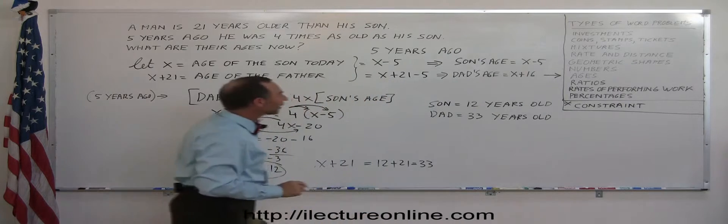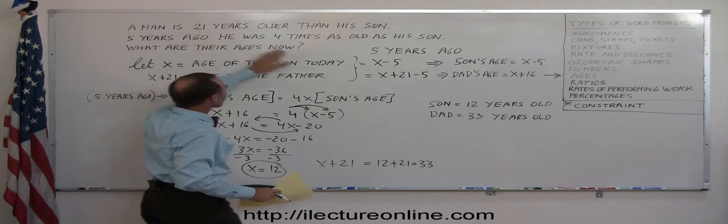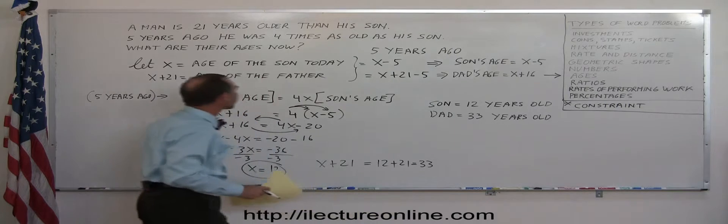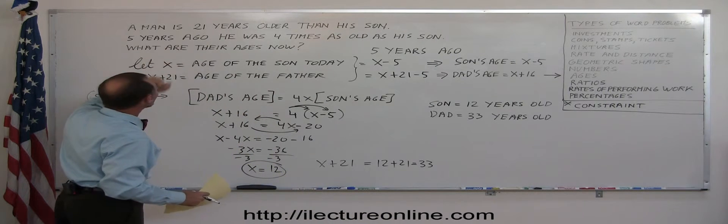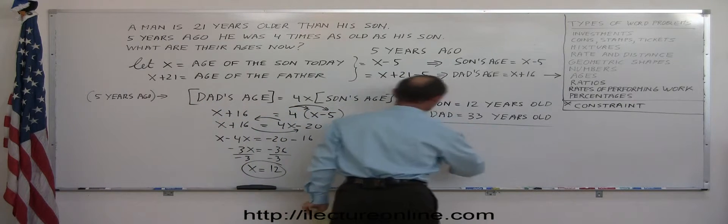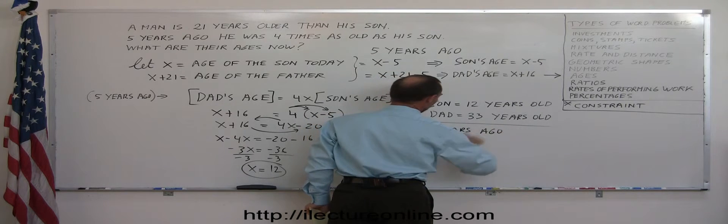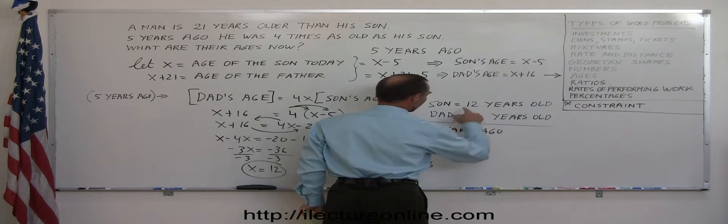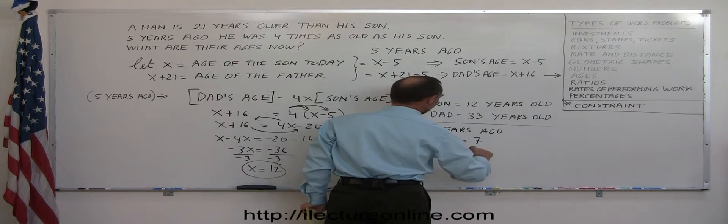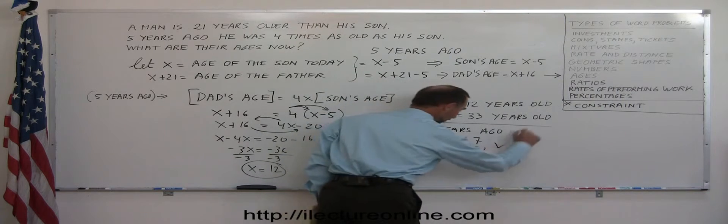And just to make sure that we did everything correctly, let's go back and see that today a man should be 21 years older than his son. So 33 is 21 older than 12. And 5 years ago, he was 4 times as old as his son. So 5 years ago, the son was 12 minus 5 or 7 years old. And the dad was 33 minus 5, which is 28 years old. And sure enough, 28 is 4 times 7. So we checked. And those are the correct answers.